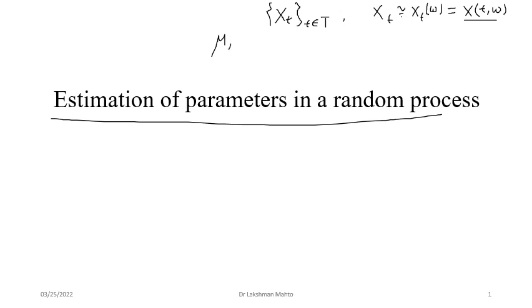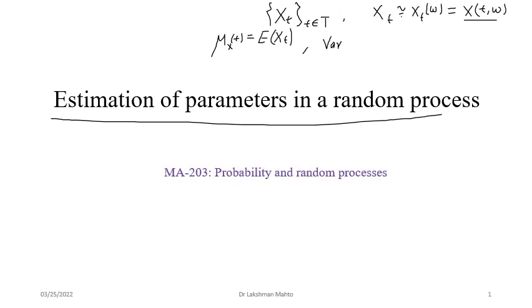We had already seen that the mean function — we put a suffix x here — happens to be a function of time, and there is no randomness because the randomness is exhausted through the definition of the mean function, since it is defined as the expectation of the random variable. We had also seen the variance and autocorrelation of a random process, which I am recalling so we can discuss estimation of those things.